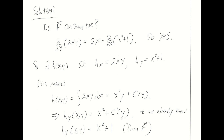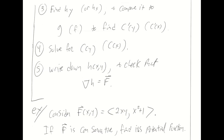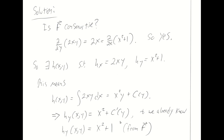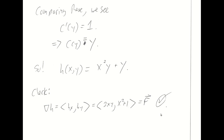Based on my original vector field big F, I also know that h sub y is equal to x-squared plus 1. So those are equal. Comparing them, c prime of y must be 1. These terms already match up, so c prime of y must be 1 if these expressions are to be equal. If c prime of y is 1, then c(y) is going to be y. I could write it as y plus 7 or y minus pi if I wanted to, but I'm not going to bother with that actual constant. We're always going to set it equal to zero.